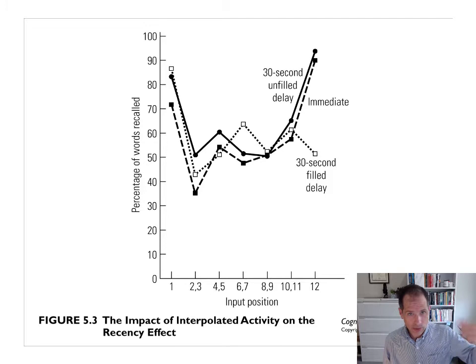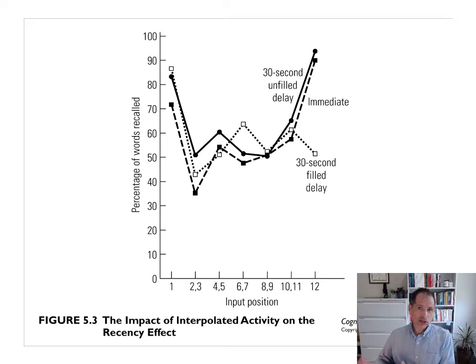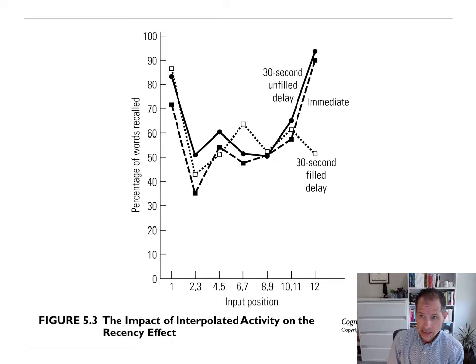You were able to rehearse the words at the beginning because they were the first ones you heard, and as the list went by you started saying those words — that's the primacy portion. At the end, when it's an unfilled delay, you can continue to rehearse the words you know. But when that delay is filled, you can't do that rehearsal. Those original words at the beginning have been rehearsed enough that you can still recall them, but the words at the end haven't been, and that's why performance suffers with that filled delay.